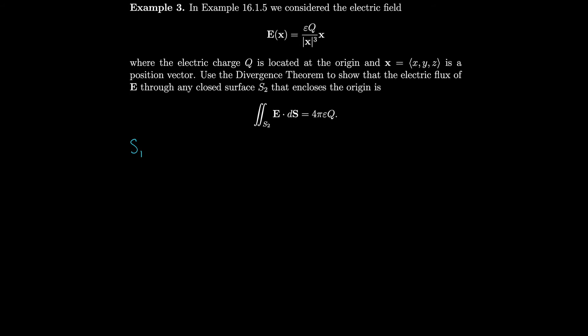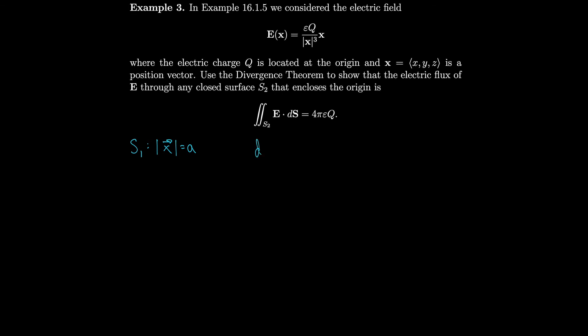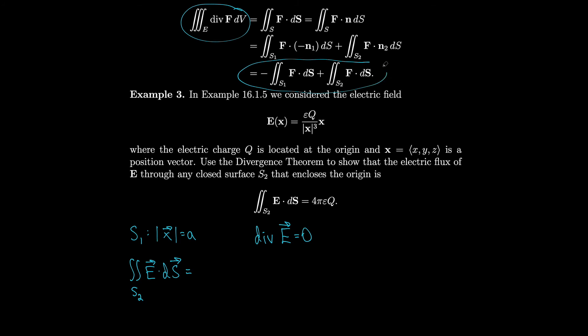Let S1 be the sphere |x| = a, that is x² + y² + z² = a². If we calculate the divergence of E, we get that the divergence is zero — the calculation is a bit messy but you can verify it yourself. Now we want to take the surface integral over S2 of E · dS and show it equals the surface integral over S1. Using the extension of the divergence theorem, we have the triple integral of the divergence equals minus the surface integral over S1 plus the surface integral over S2.